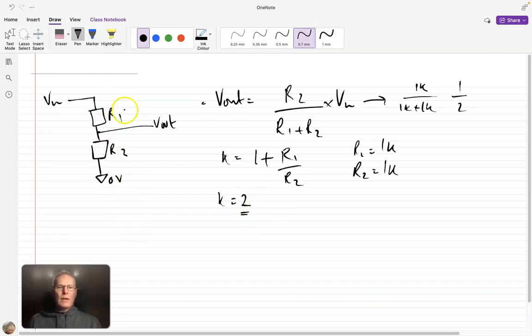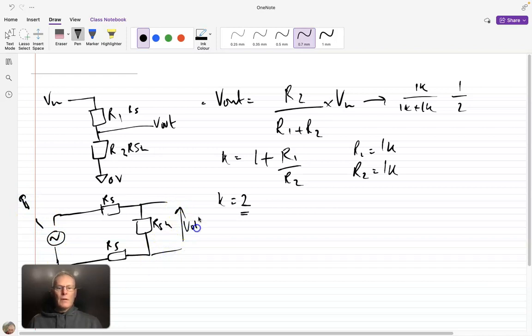If we consider, if we now call this the series resistor and this the shunt resistor, if we consider what that might look like in a balanced system, it might look like this. So we have our RS, we have our R shunt, and we have another RS here. So this is our signal here, maybe that's coming from a microphone. And this here is our Vout.